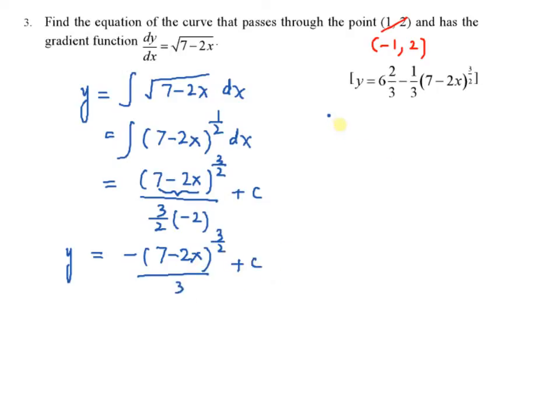Now you have to find the value of c. You have to use this point, negative 1, 2. y equal to 2, negative 7 minus 2 times negative 1. You have 9 power 3 over 2 over 3 plus c. So this equal to negative 9 plus c. So therefore, your c equal to 11.